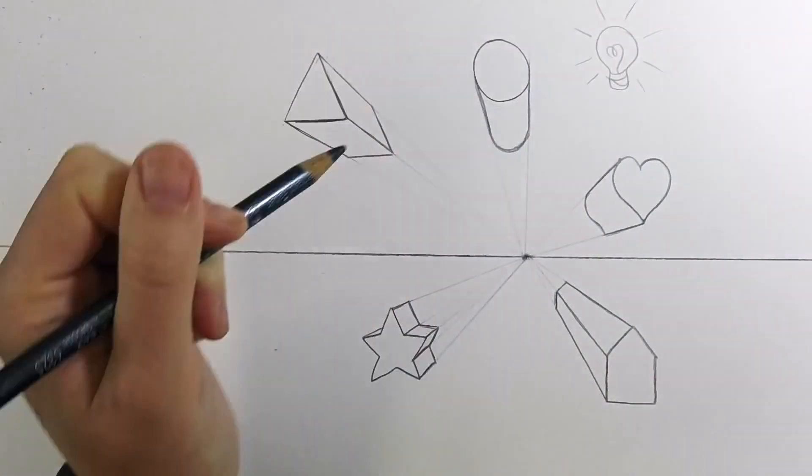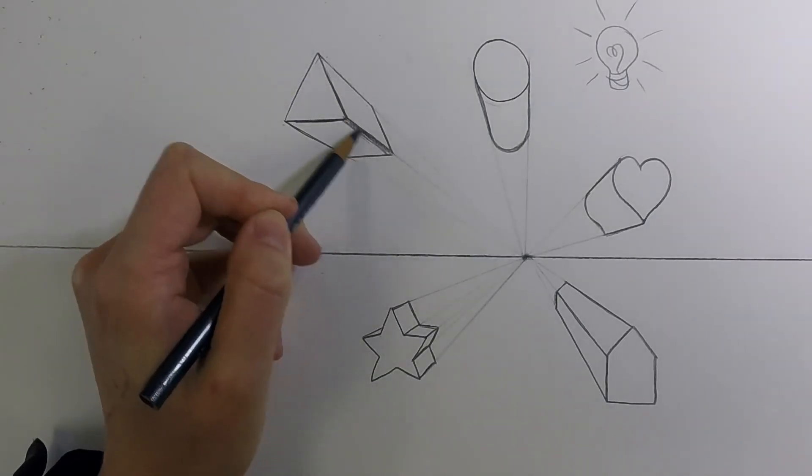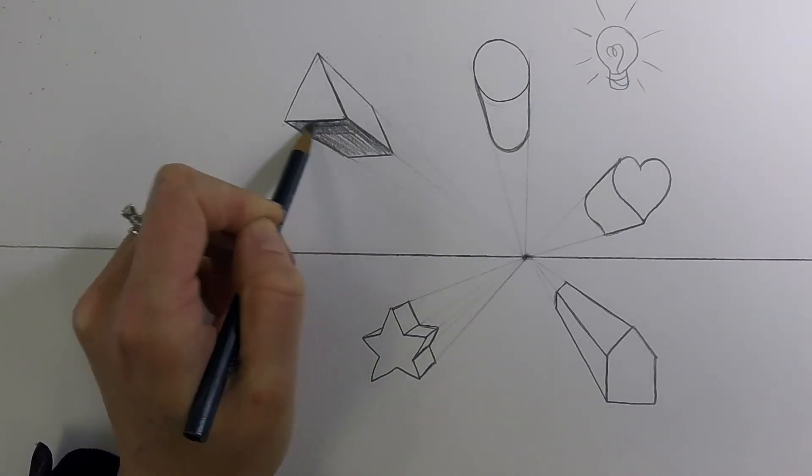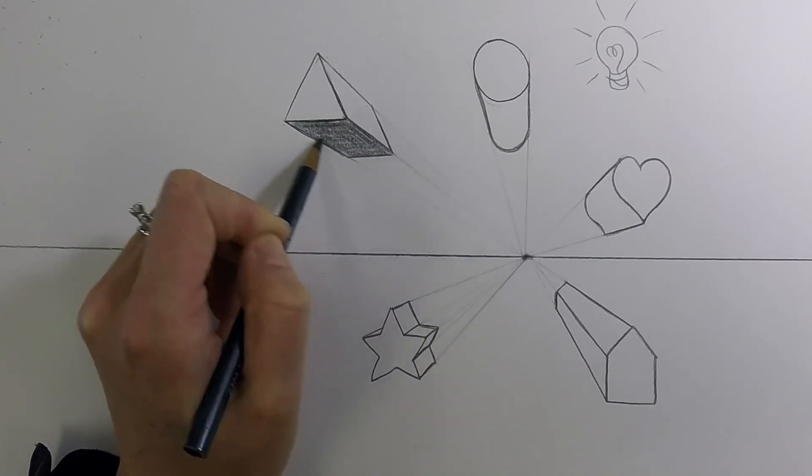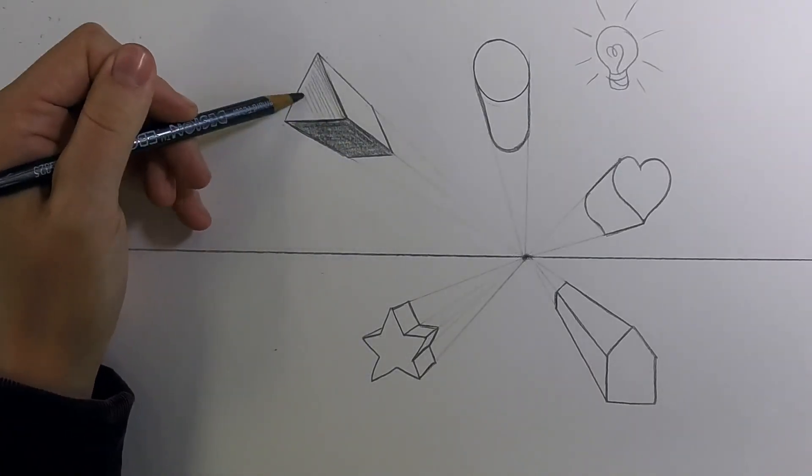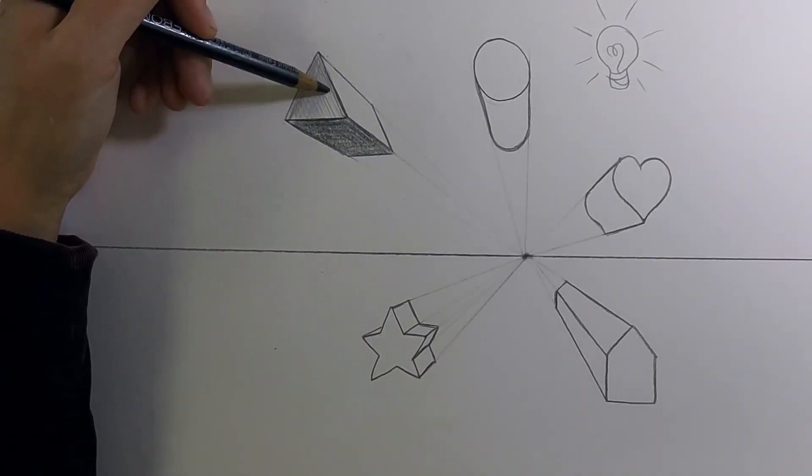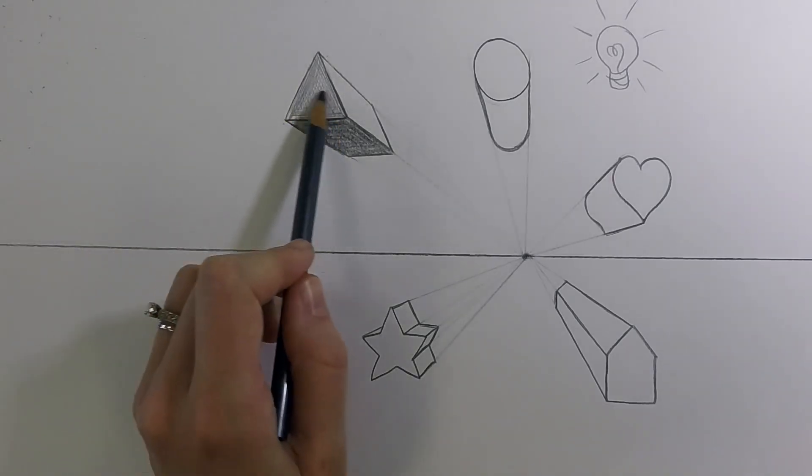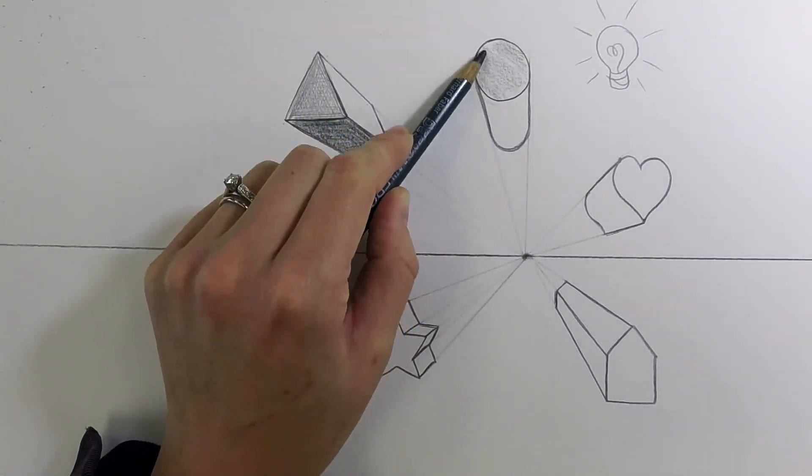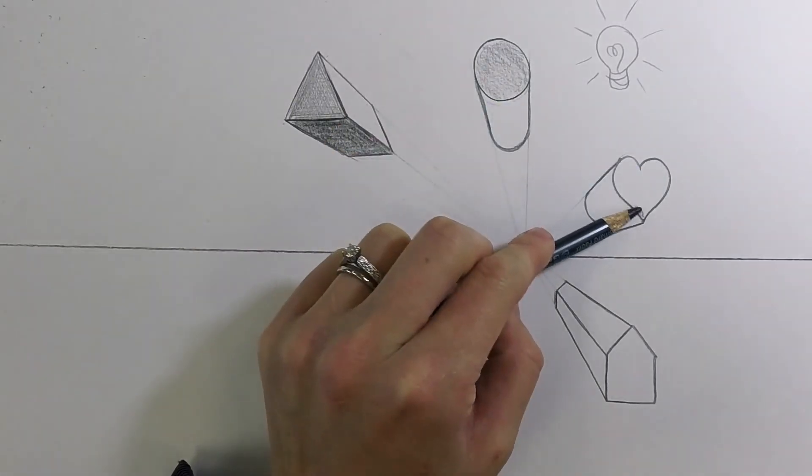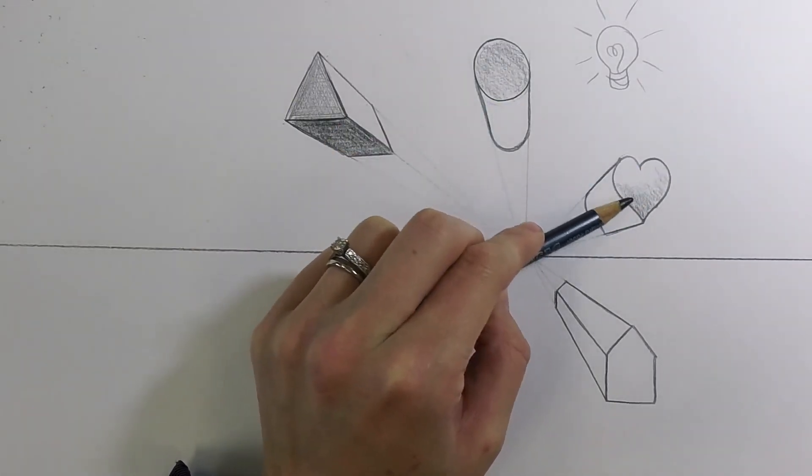And then we can erase those extra converging lines. And now we'll quickly go through some shading. So we imagine where our light source is, and we color the areas that are farthest away from the light, the darkest. Areas that are a little bit away from the light, kind of a medium value. And then the areas that are directly facing the light would be in a highlight.